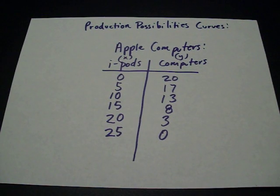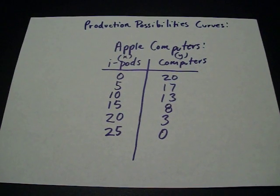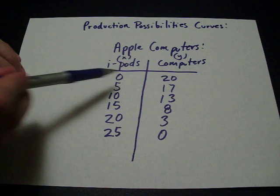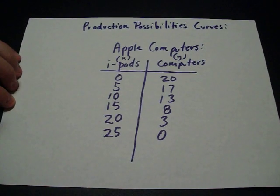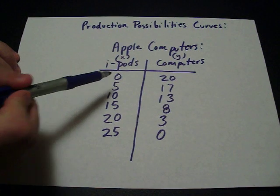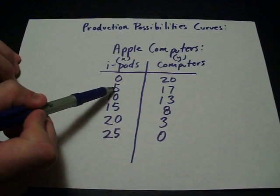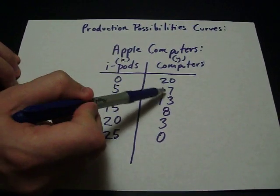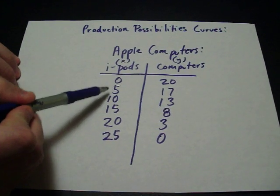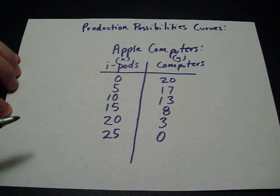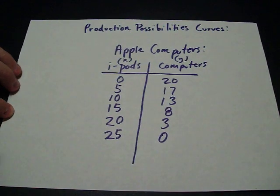Let's say that in a given hour this is what they can produce. In an hour they could produce 20 computers and no iPods if they're as efficient as possible, or if they decide they want to produce some iPods, let's say five, they have to give up the opportunity to produce computers. So as we produce more of one product we're producing less of the other. So this really just shows opportunity cost.